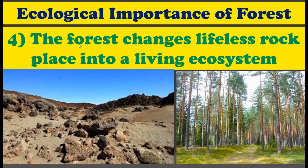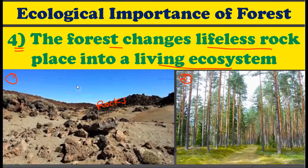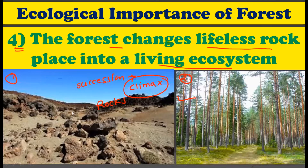The next ecological function of forest is that the forest changes the lifeless rock into a living ecosystem. In the first picture, you can see a very lifeless land made up of only rocks. As you know, the process of succession starts with lichen, then smaller plants, and then larger plants. After a certain period, this reaches the climax, resulting in the formation of forest. So the very dry, rocky land gets converted into forest, and this forest can then hold many animals and plants all together. The forest also converts lifeless land into a living land.